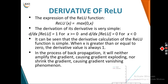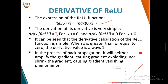The ReLU function outputs the same value as input for positive values and zero for negative values. Its derivative is very simple: it equals 1 for all positive values and 0 for all negative values. Because the gradient is a constant value of 1, during back propagation it will not amplify the gradient — which could cause gradient explosion — nor shrink it — which could cause the vanishing gradient problem. This makes ReLU a very helpful activation function.